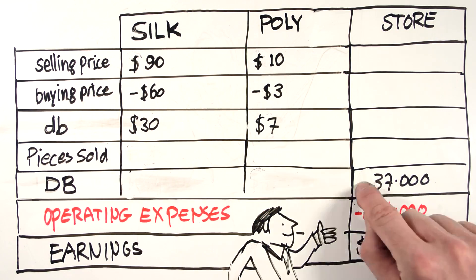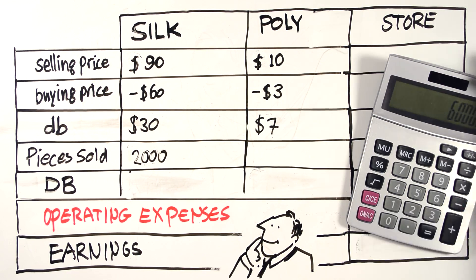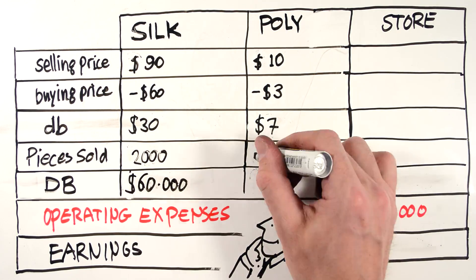We might want to focus on one customer segment and sell 2,000 pieces of one type of dress instead of 2 times 1,000 of each. What is more profitable?